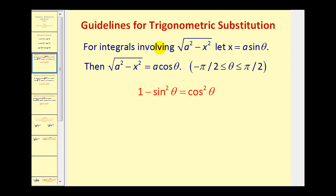We'll be looking at three different types of integrals that require trig substitution. The first type involves the square root of a squared minus x squared. If we have an integral in this form, we let x equal a sine theta, and then the square root of a squared minus x squared will equal a cosine theta. This is based on the identity one minus sine squared theta equals cosine squared theta.